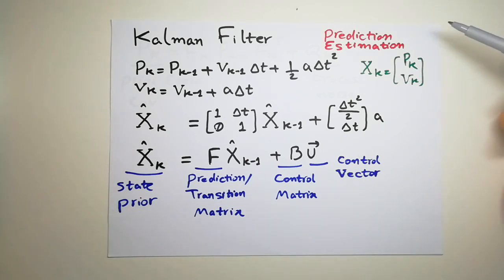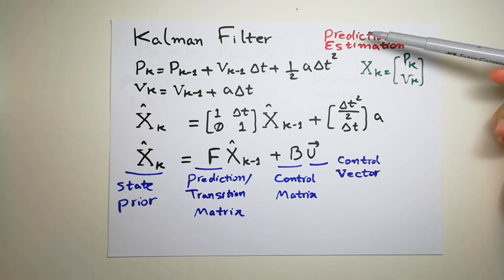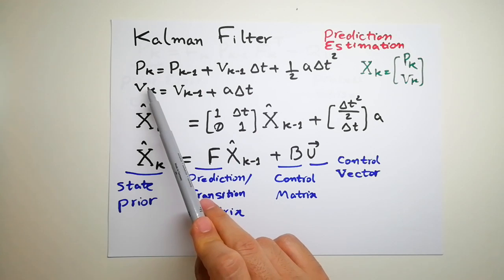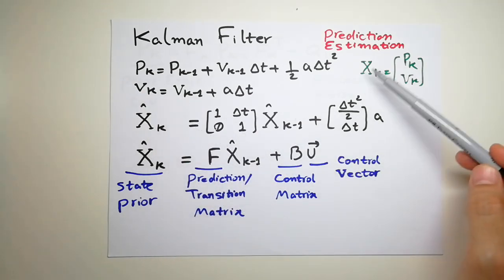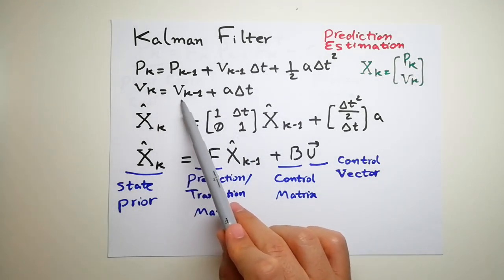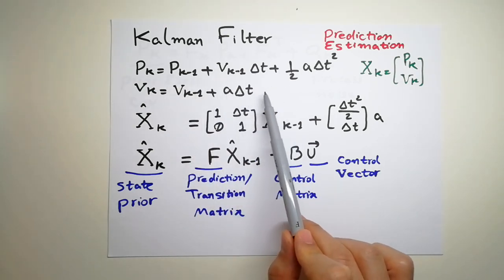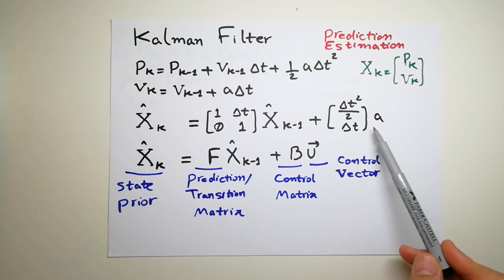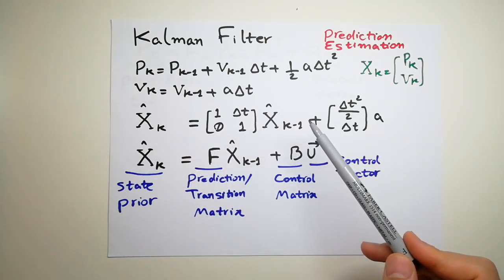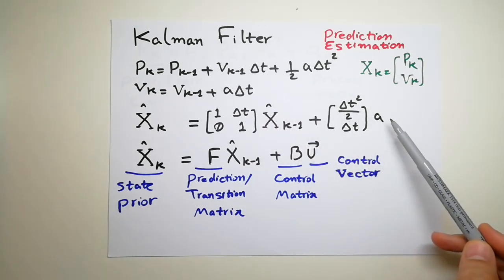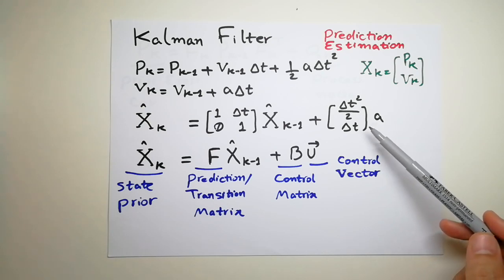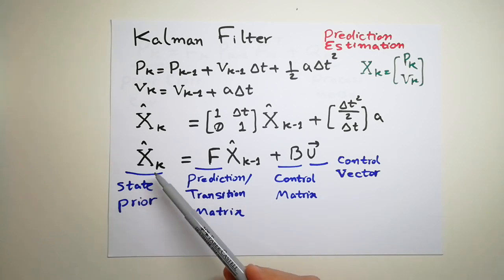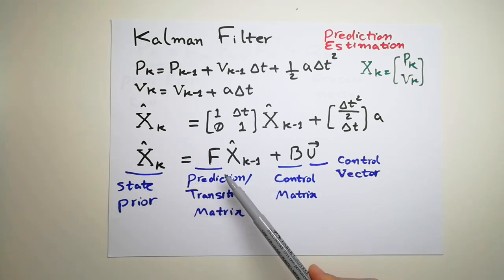We have a prediction state from the Bayes filter. From Newton's law of motion we know the position and velocity in the next state based on the previous state. Our state is position and velocity — the new velocity is the old velocity plus acceleration multiplied by delta t, and similarly for position. If we put it in matrix form, the new state is this transition matrix multiplied by the previous state plus a control matrix — where we exert a new force to get the acceleration — and you can write it in matrix form.